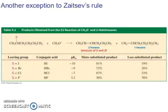Now, based on the leaving groups — another exception to the Zaitsev rule. With iodide as the leaving group, the pKa value gives more-substituted product at 81%. With X = Br and HBr: 72%. With Cl: 60 to 67%. With fluorine: only 30%. So, more-substituted products decrease as the leaving group quality increases with the much more bulky leaving groups.